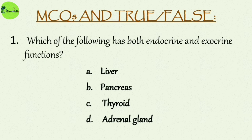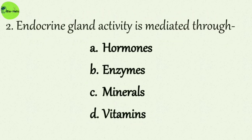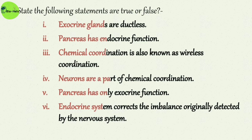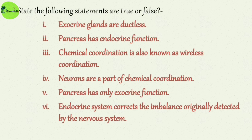Practice questions: Which of the following has both endocrine and exocrine functions — liver, pancreas, thyroid, or adrenal gland? Endocrine gland activity is mediated through hormones, enzymes, minerals, or vitamins? True or false: exocrine glands are ductless; pancreas has endocrine function; chemical coordination is also known as wireless coordination; neurons are part of chemical coordination; pancreas has only exocrine function; endocrine system corrects the imbalance originally detected by the nervous system.